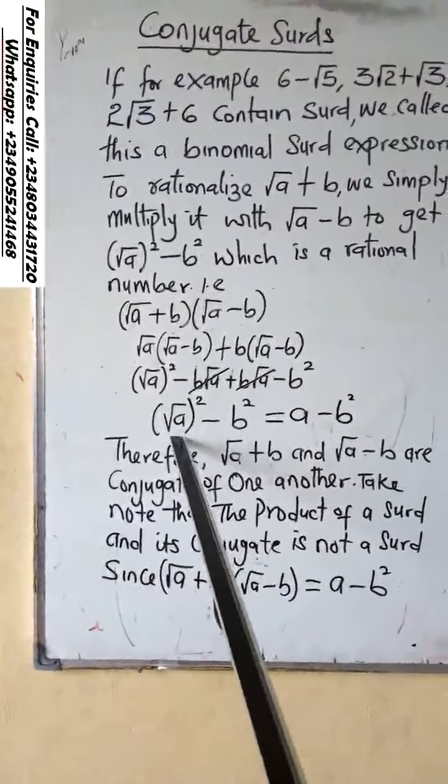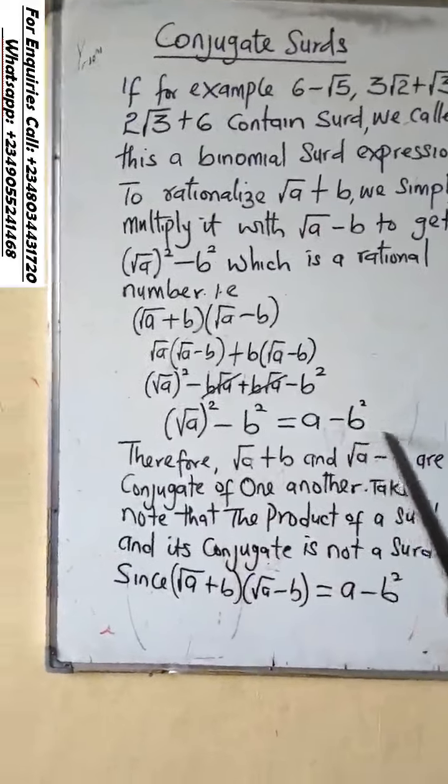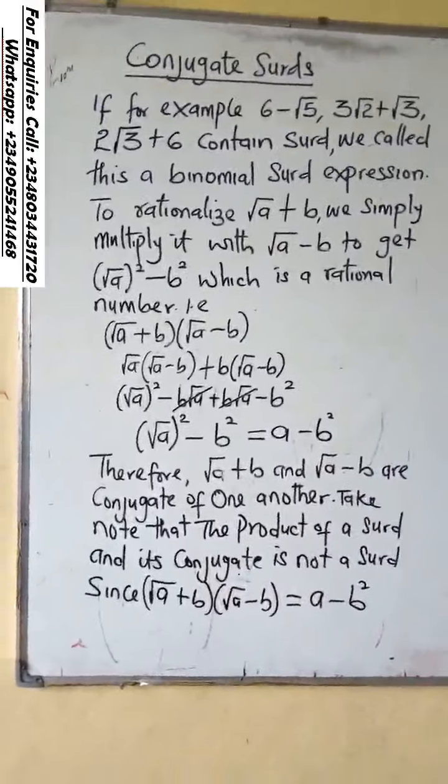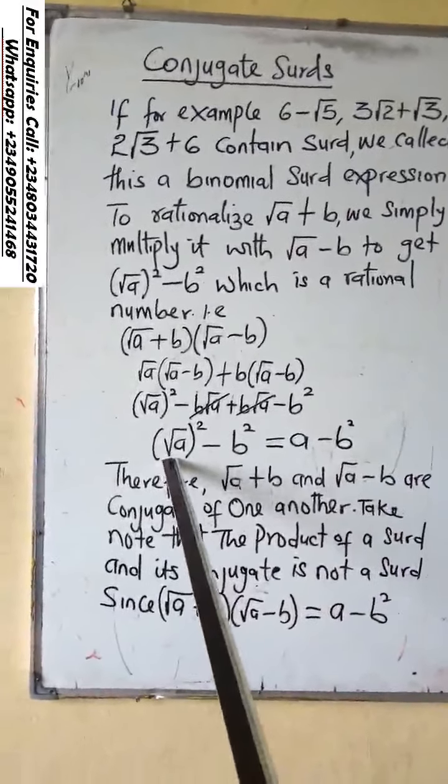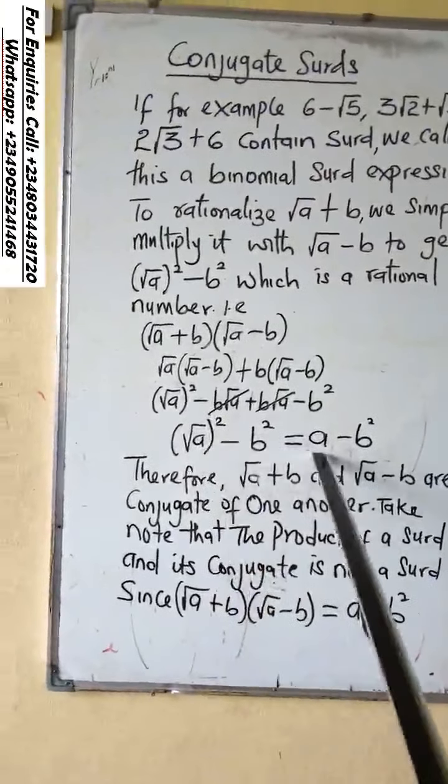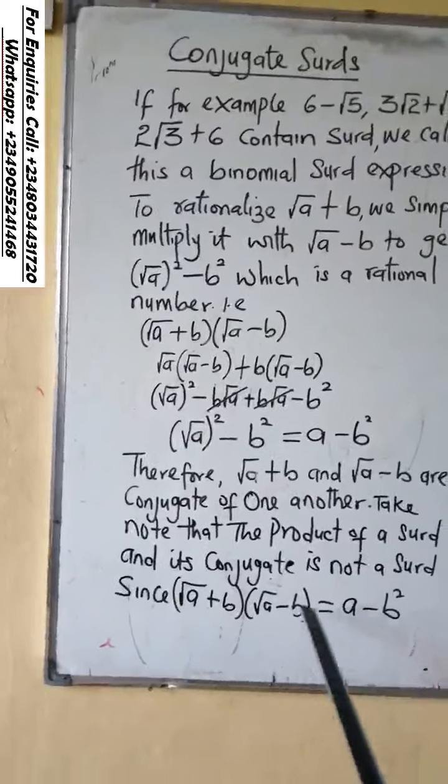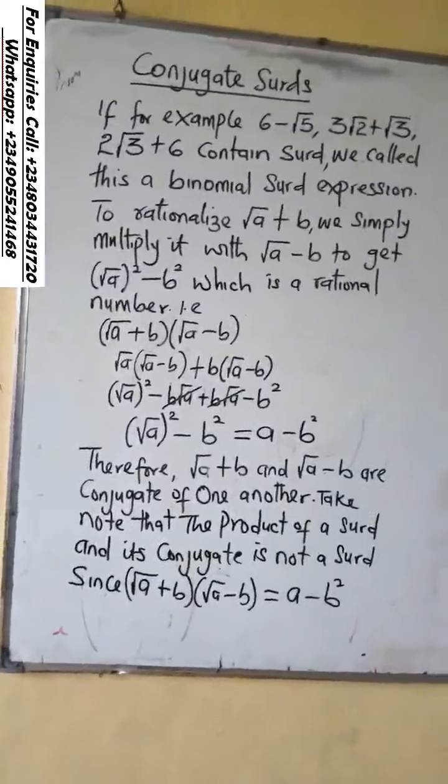Which is the same thing as a minus b squared. You can see that the square roots have disappeared because square root of a raised to power 2 is a. So the product of a surd and its conjugate is no longer a surd.